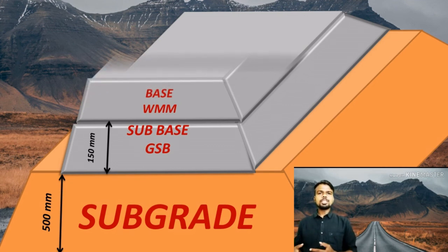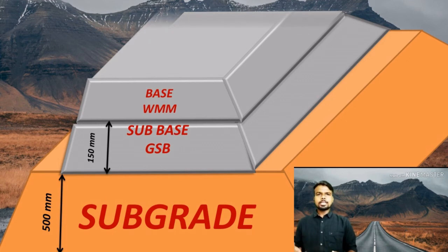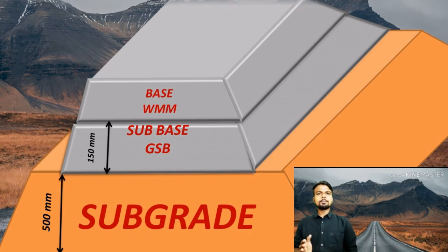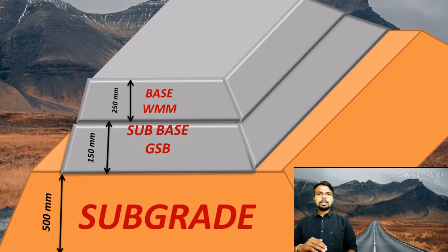The base layer is called an unbound base layer. It may consist of Wet Mix Macadam (WMM), Water Bound Macadam (WBM), reclaimed concrete, and blast furnace slag mixed with crushed stone. The minimum thickness of the granular base layer shall be 150 mm, except for a crack relief layer placed over cement treated base, for which thickness shall be 100 mm.